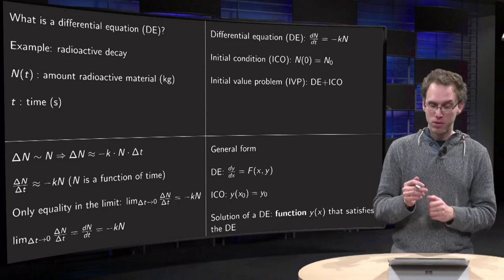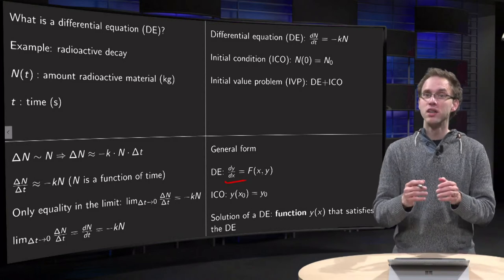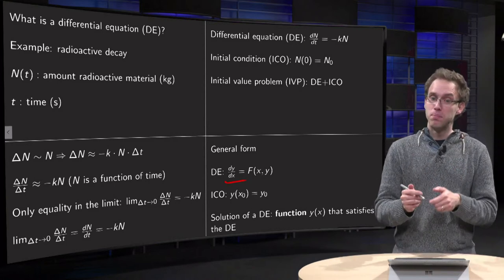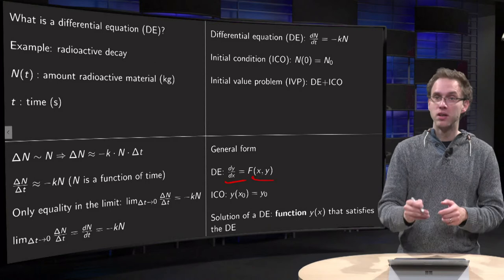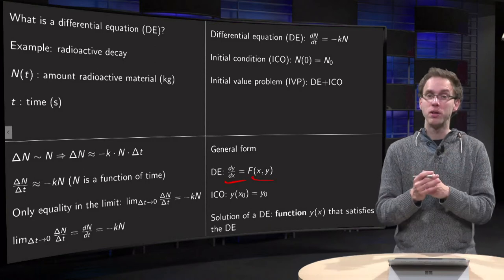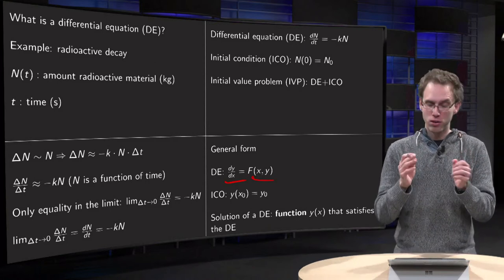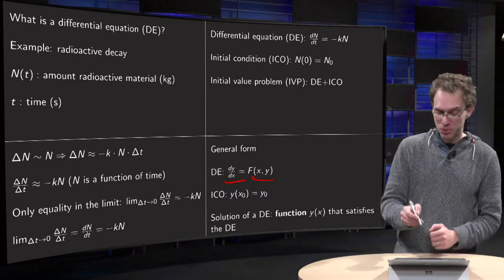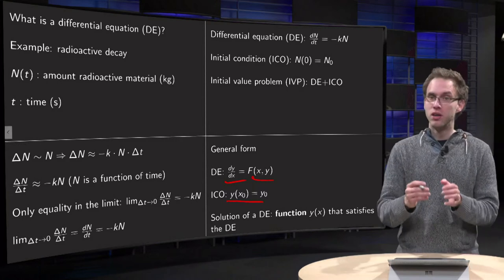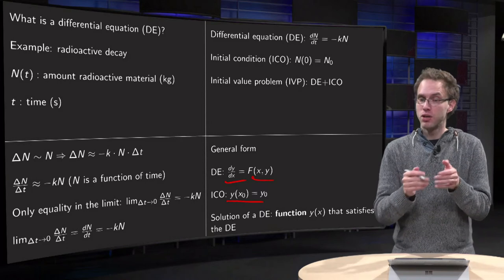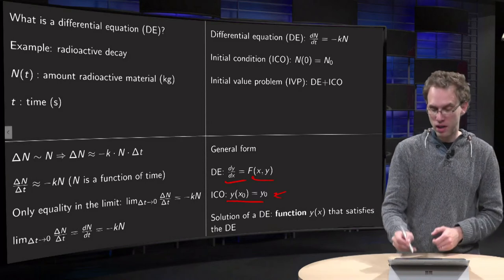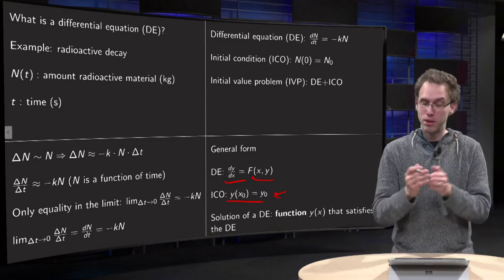We have some dy/dx. The rate of change of y depends on the right hand side on y and maybe on x as well. That's the general form. An initial condition is some condition y at x_0. Where you start at x_0 equals some y_0. So, x_0 and y_0 are some given numbers.